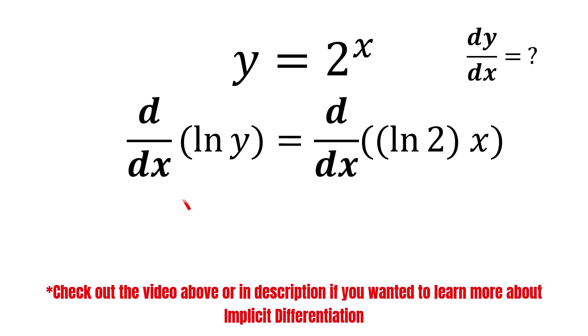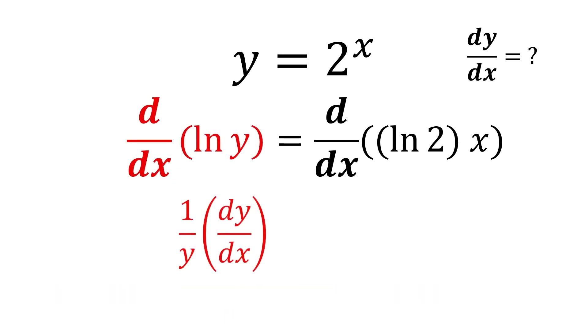Differentiate ln y with respect to x. We get 1 over y, multiply by dy dx.